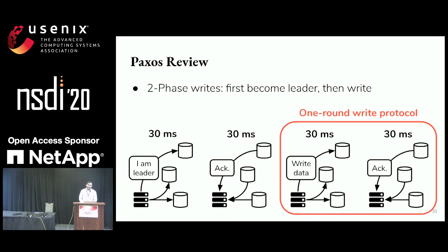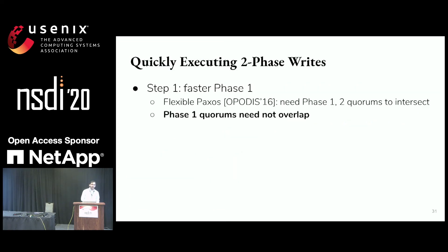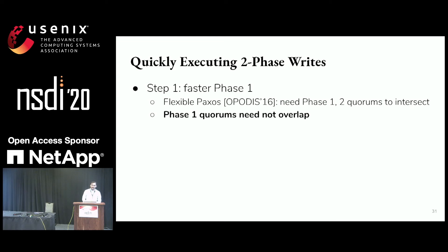We make two changes. The first is to speed up phase one. It's been noted that for Paxos to execute correctly, phase one and phase two quorums don't need to be the same — phase one quorums only need to intersect with phase two quorums, not with each other. We leverage this to make phase one quorums small.